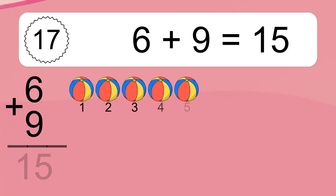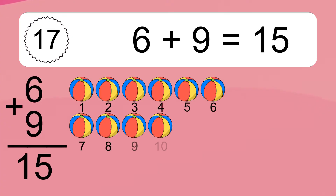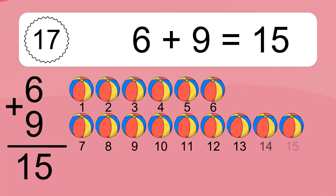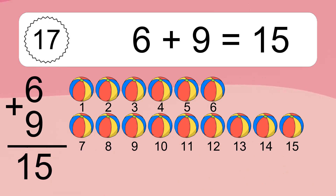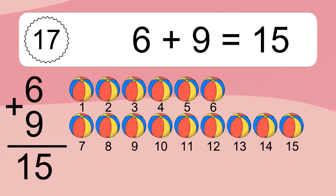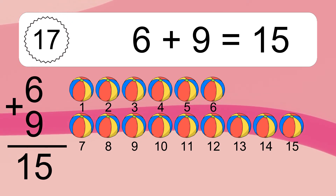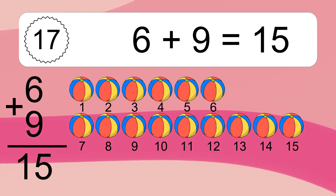6 plus 9 equals 15. Let's count it: 1, 2, 3, 4, 5, 6, 7, 8, 9, 10, 11, 12, 13, 14, 15.